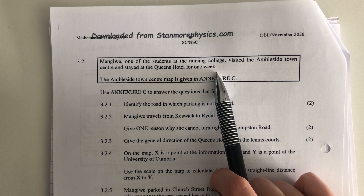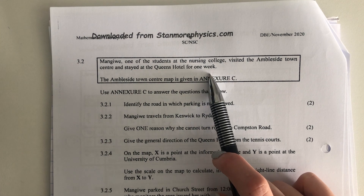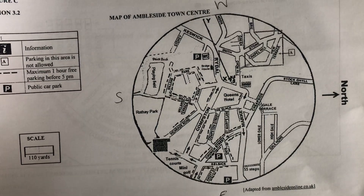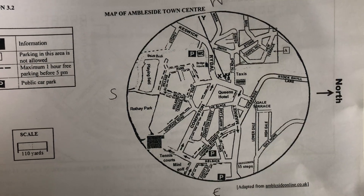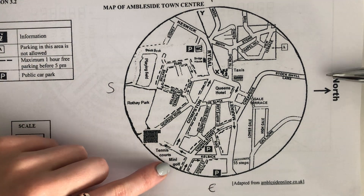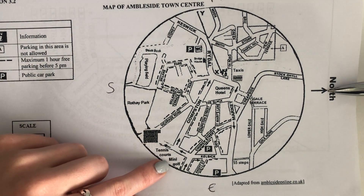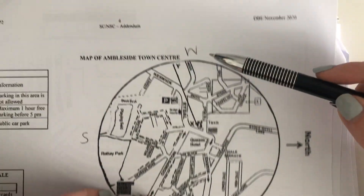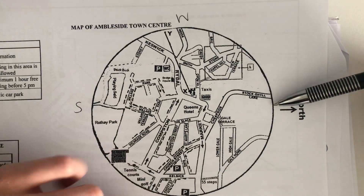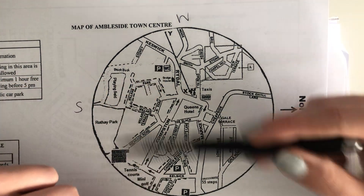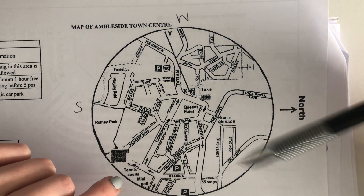The Ambleside Town Centre map is given as an annexure — make sure that you have that. It looks like this. Yours will be printed a bit better than mine. My printer is a little bit dodgy. But please always make note of where north is. We know that we go clockwise: north, east, south, west. I always remember that as 'never eat silkworms.' That's important because they're probably going to ask us some form of directions.